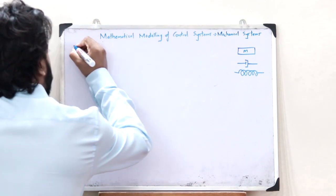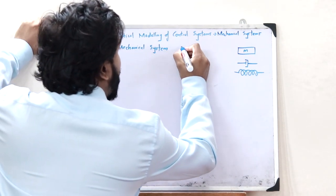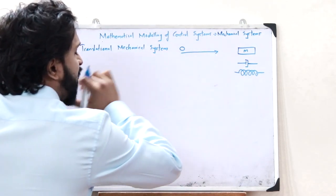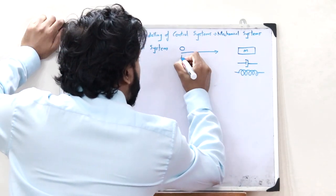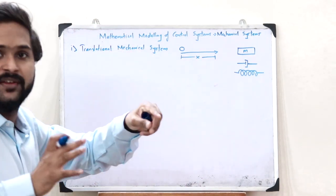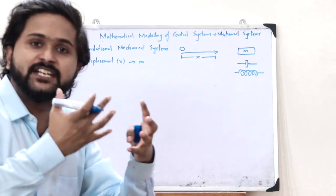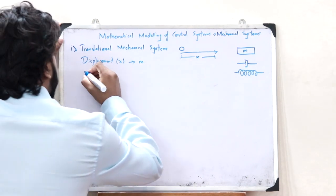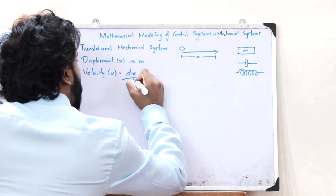Let us look at a translational mechanical system. In a translational mechanical system, a particular object moves along a straight line, and therefore as it moves along that straight line, it would have a particular displacement, say x. The unit of this displacement x is meters. The rate of change of displacement gives us the velocity, so velocity v is given as dx/dt, and the unit of velocity is meters per second.